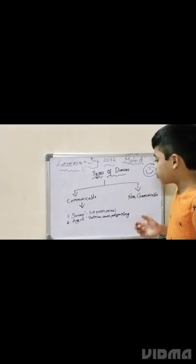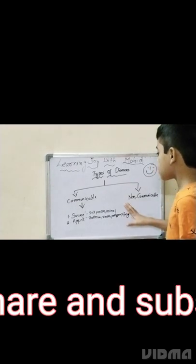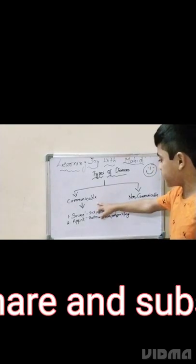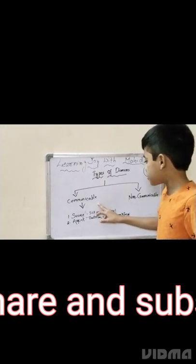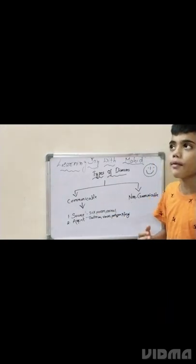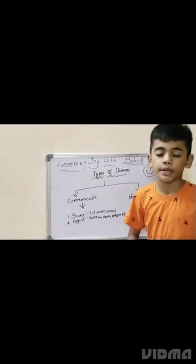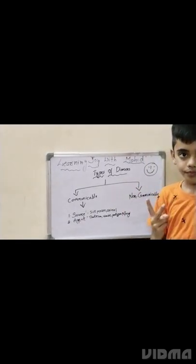Today our topic is communicable diseases. There are four types of communicable diseases, but today in this video — part one — we will discuss only two.